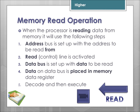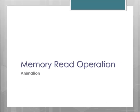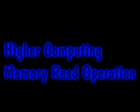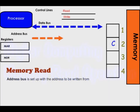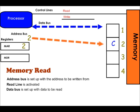The memory read is the converse of the memory write. When reading data from memory: the address bus is set up with the address to be read from, then the read control line is activated. The data travels along the data bus and is placed in the memory data register. Then, if it's an instruction, it will be decoded and executed; if it's data, it will be used in some other operation.